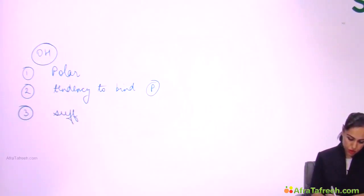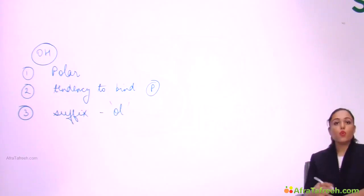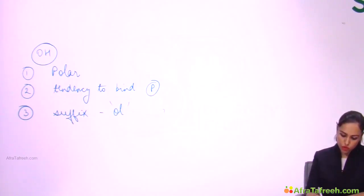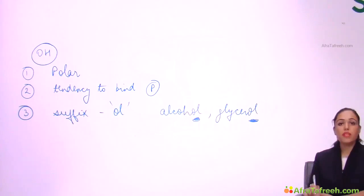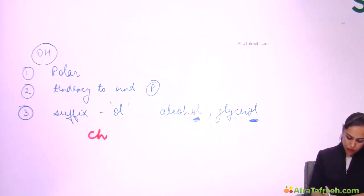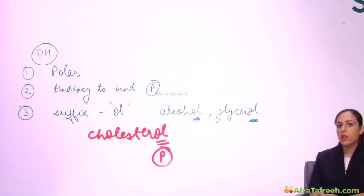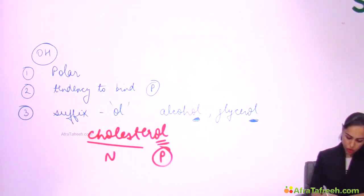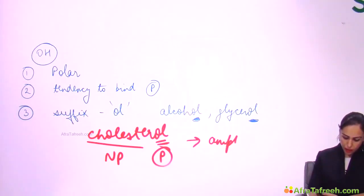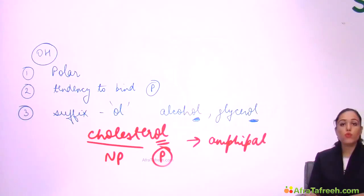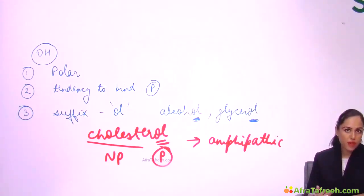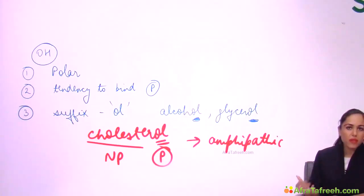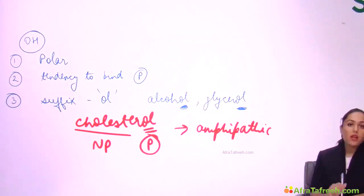The third point about OH: whenever a compound has OH, the suffix used is '-ol', written at the end of the compound's name. For example: alcohol, glycerol — you can see '-ol' written at the end, meaning it has OH and is soluble in water. Now look at cholesterol — '-ol' at the end means it has a polar component, but cholesterol is a lipid and also has a non-polar component. Any compound having both polar and non-polar components is known as amphipathic. So cholesterol is amphipathic — no need to cram it, the name tells you.